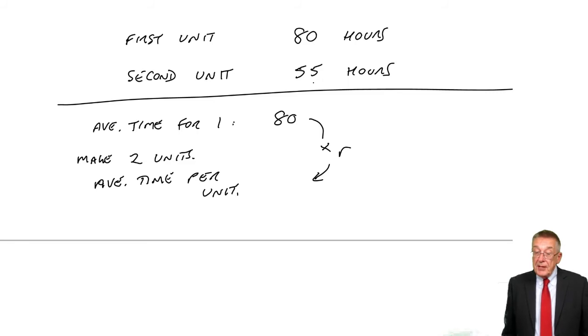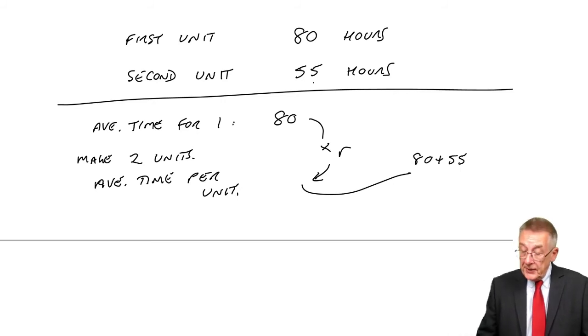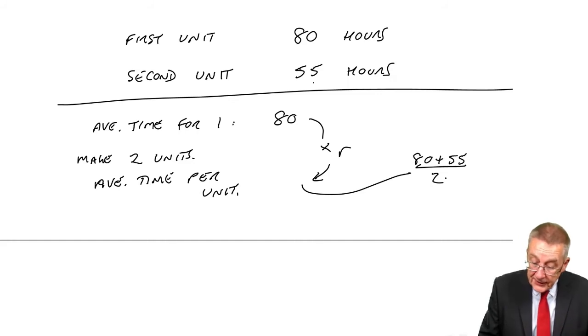Well, what is the average time per unit if we make two? The first took 80, the second took 55. Well, the average time to make both of them took what, 135 hours? Divide by two for the average. The average time per unit is 67.5 hours.